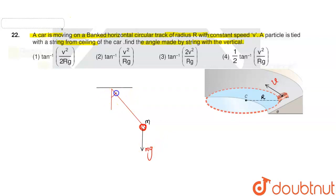If this angle is theta, then the tension is T. This tension has two components: the vertical component T cos theta and the horizontal component T sin theta.